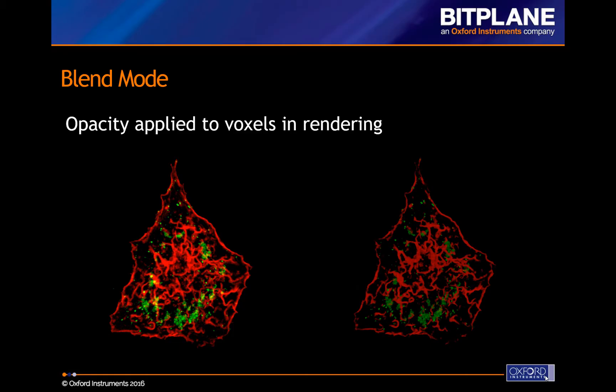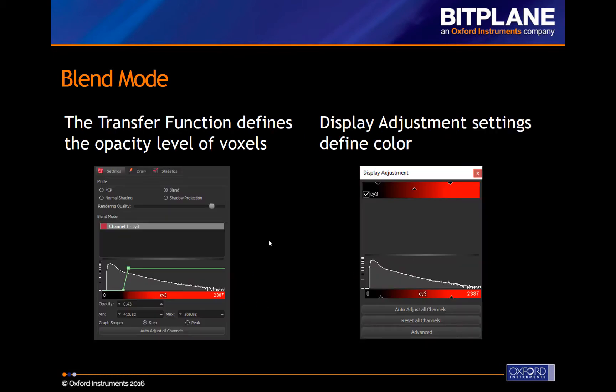Within Amaris, the MIP volume rendering mode is used most often. We encourage users to also render with the Blend Mode because it adds opacity to the voxel rendering. Here, you cannot determine if the green granules are above or below the red actin on the left in MIP mode, but you can on the right using the Blend Mode.